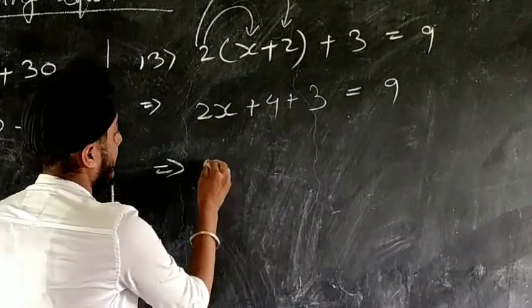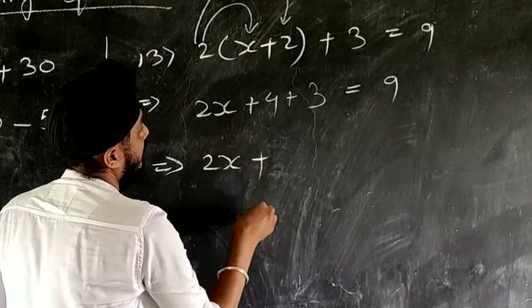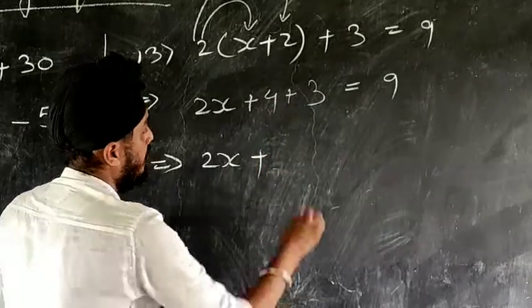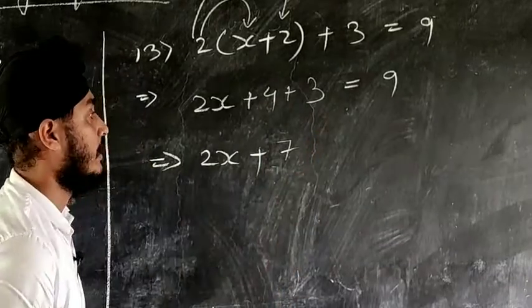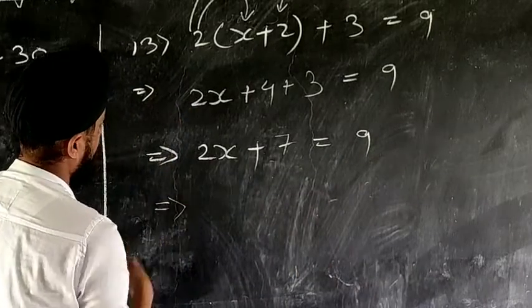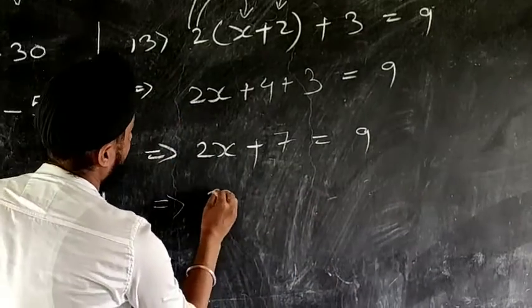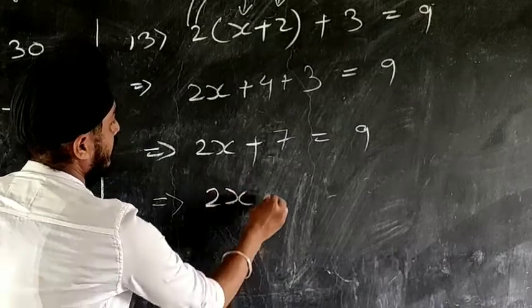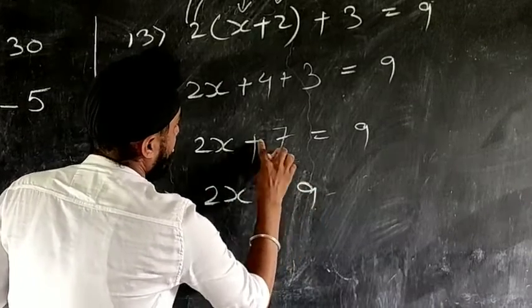And the next step, so what will we do? Let 2x be on this side. So what I will do, I will take 7 on the right hand side. Already we have 9 on the right hand side, so when plus 7 goes to the right hand side, it will become minus 7.